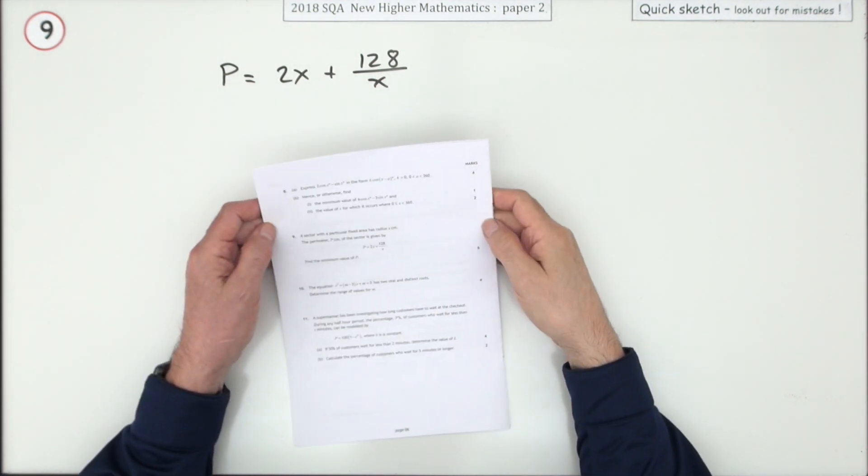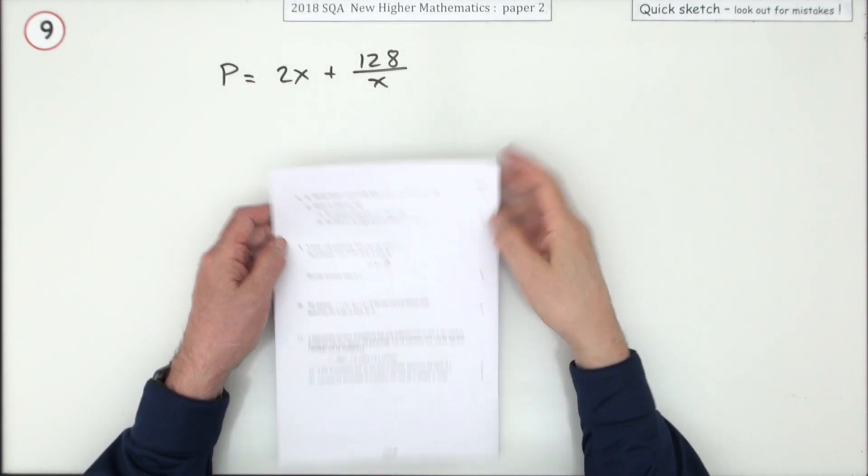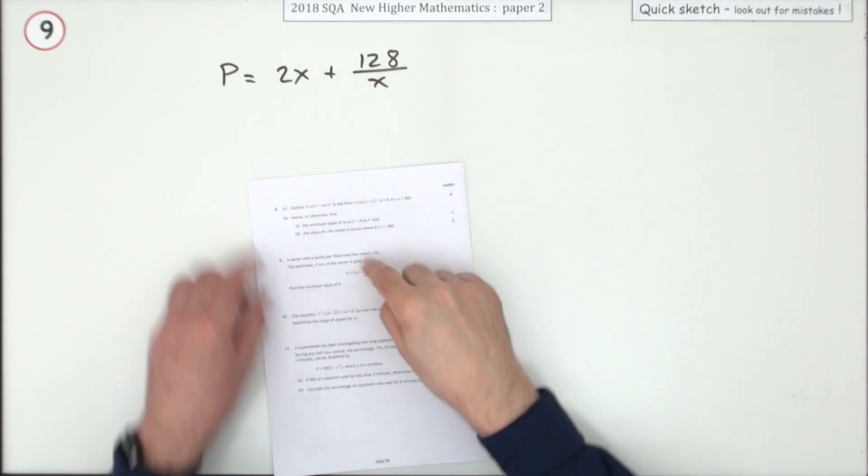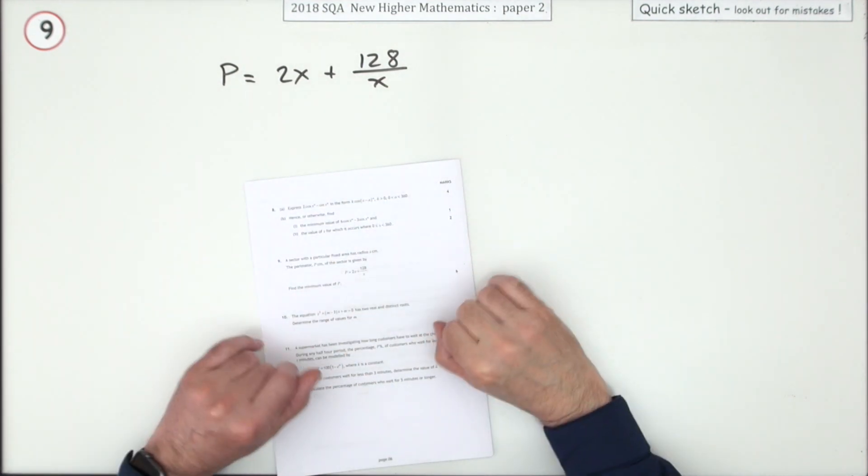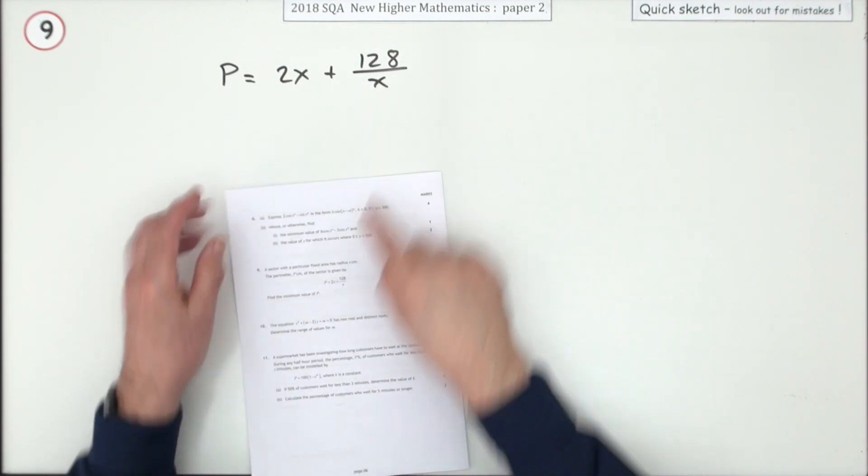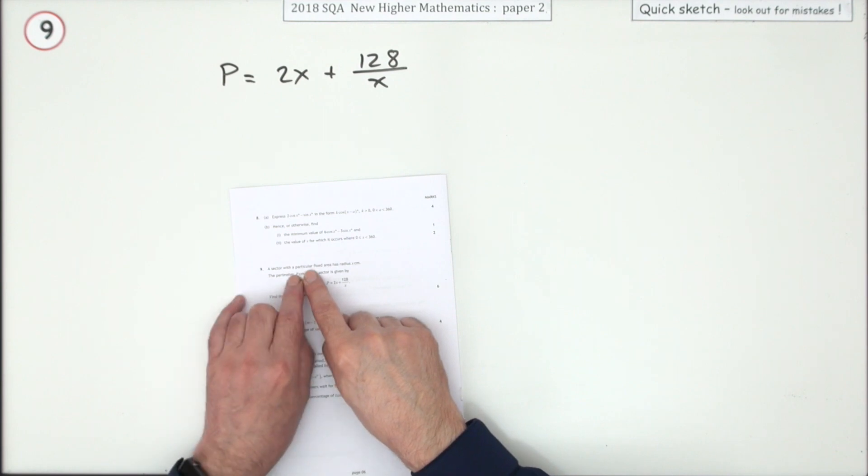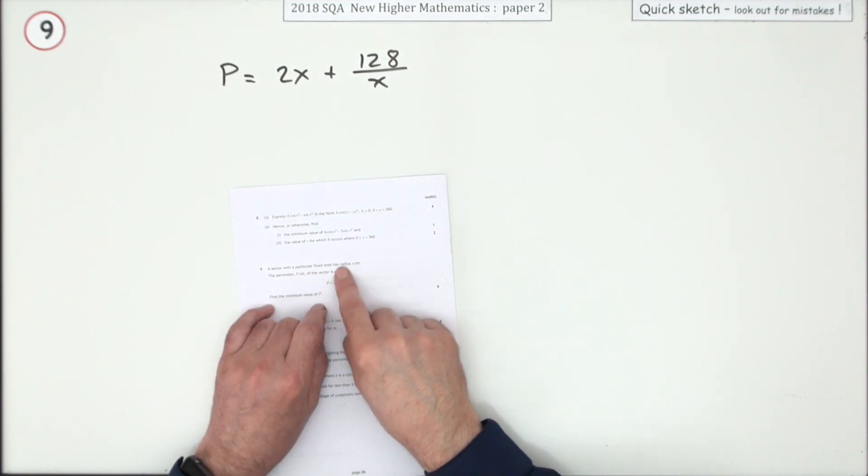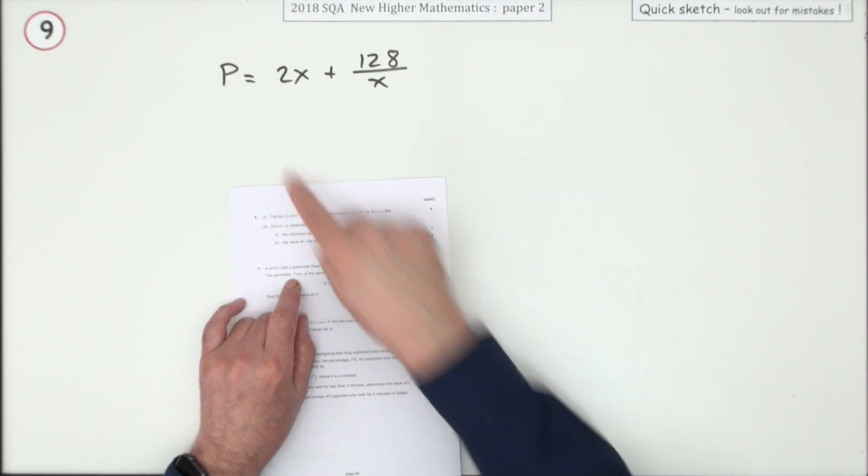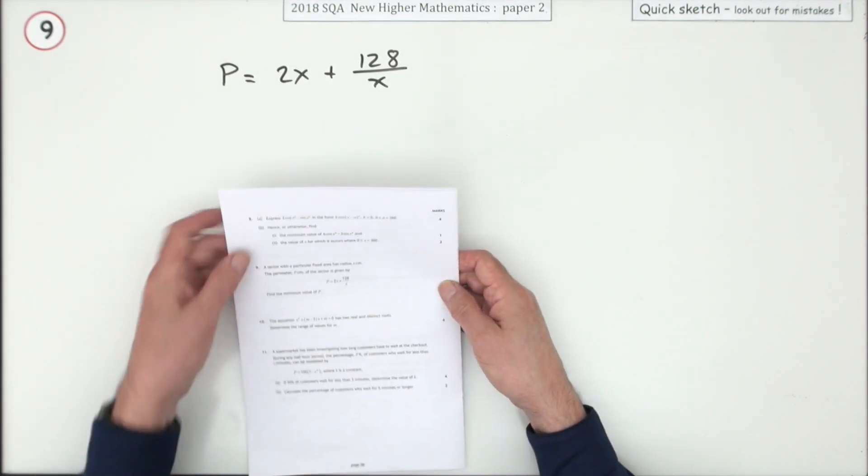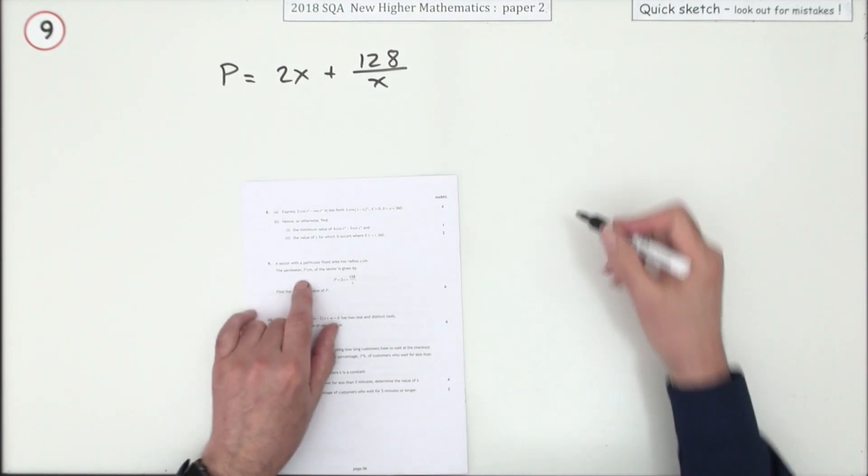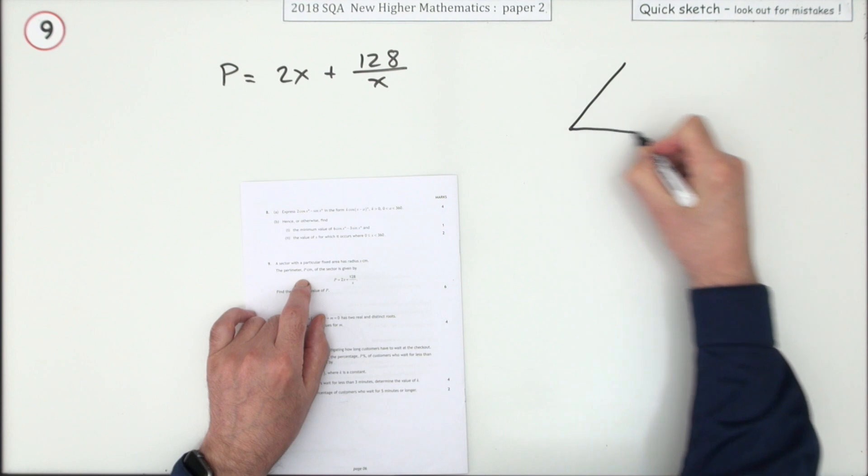Number nine from paper two of the 2018 Higher Maths, six mark question. It's the optimization question, but without part a, the part that scares you off I suspect. Actually looking at this and the way it says a sector with a particular fixed area has radius x, I'm sure the first part was originally it told you that area and you had to derive that expression for the perimeter, and then go on to the second part. We'll just play with that just now.